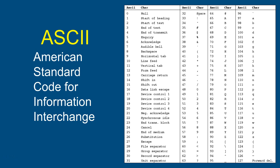Carriage return and line feed are still used today - that's how text files mark end-of-line. In Windows it's actually a two-character sequence: carriage return followed by line feed, just like on a typewriter. That's the convention Windows uses. Even though the history comes from a long way back, these characters are still part of the standard.